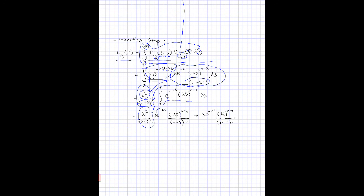On this line we still have the same expression, and the outer and inner parts are also constants with respect to s. However, the exponent n minus 2 becomes n minus 1 when we take the derivative — because differentiating brings that exponent down, so we divide by the same term. We also divide by lambda due to the chain rule applied to the inner function.